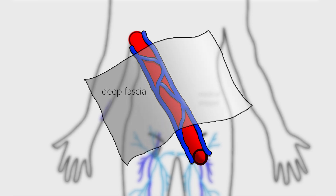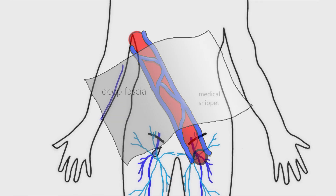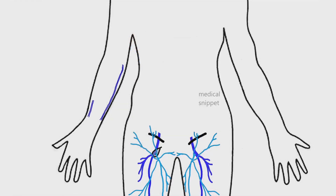First, we'll discuss the deep veins. The deep system of the upper limb is formed by the ulnar veins and radial veins in the forearm. They join to form the brachial veins.